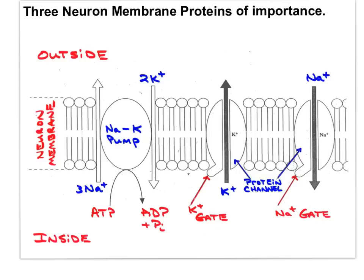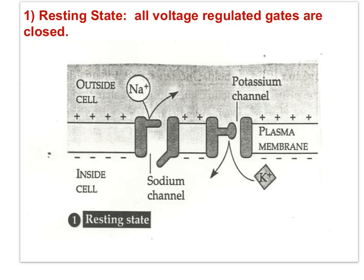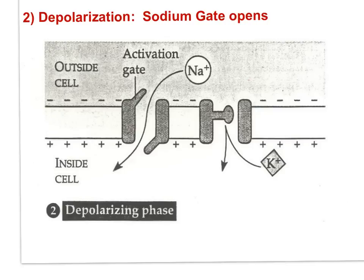In the resting state, all voltage-regulated gates are closed — the sodium gate is closed, the potassium gate is closed. The sodium-potassium pump establishes the polarized condition known as resting potential. At the beginning of the action potential, the neuron membrane depolarizes: sodium gates open due to a change in charge in the adjacent upstream region, and sodium diffuses into the cell, causing the outside of the membrane to become negative relative to the inside.